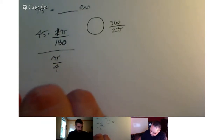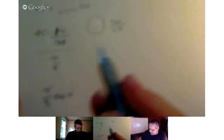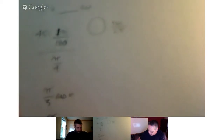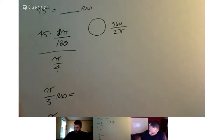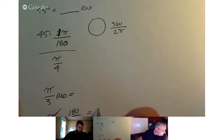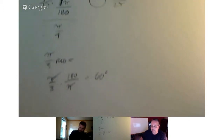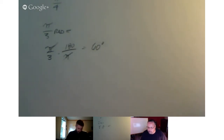Pi over 3 radians equals — in this case we do the exact opposite. We put pi over 3, times pi here and 180 here. The pi's cancel and we're left with 60 degrees. So that part was pretty straightforward. I just wanted to make sure that we had that before we went too far.